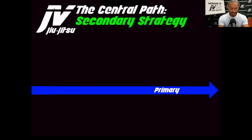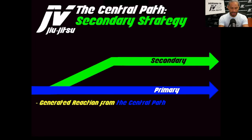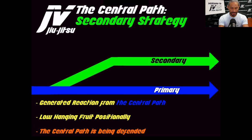Secondary strategies are generated reactions from the central path, or low-hanging fruit positionally, or situations where the central path is being defended. The yellow signifies low energy expenditure and the orange signifies medium energy expenditure. When somebody is defending the central path, you have to work a little bit harder. Low-hanging fruit is very easy to do, and a generated reaction is very easy to do as well.